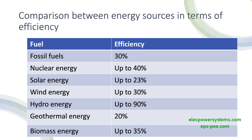Hydro energy is a renewable energy source that uses the energy of flowing water to generate electricity. The efficiency of hydropower plants varies depending on the size and location of the plant, but the average efficiency of modern hydropower plants is around 90 percent. The advantage of hydro energy is that it is clean and renewable, but the disadvantage is that it is dependent on the availability of water and can have significant environmental impacts.